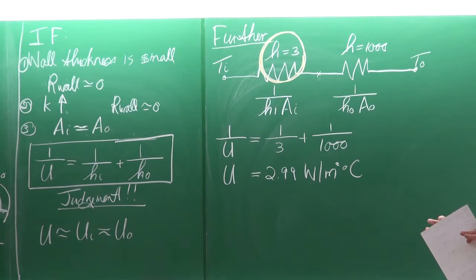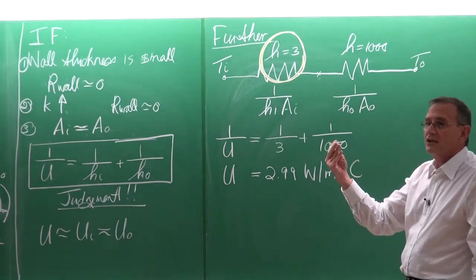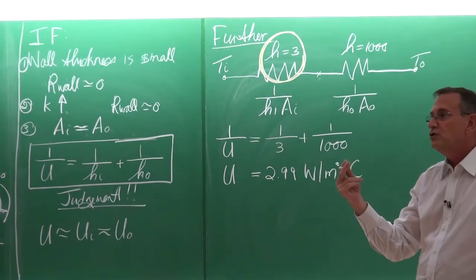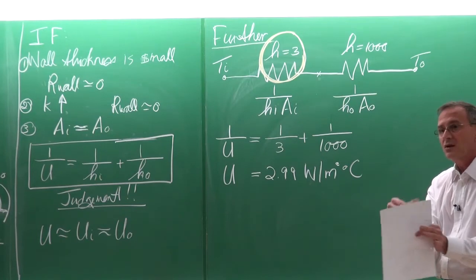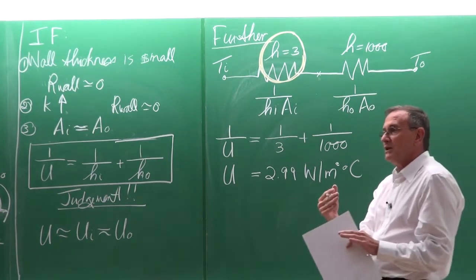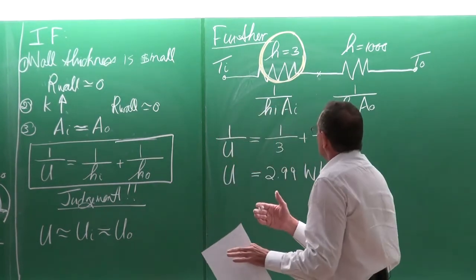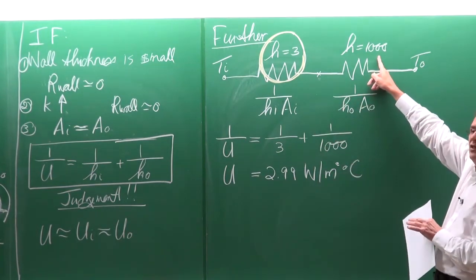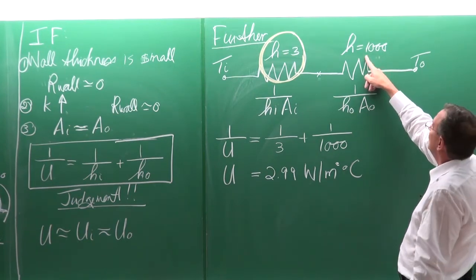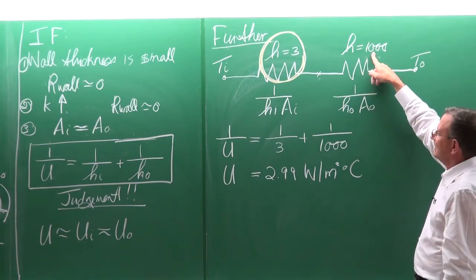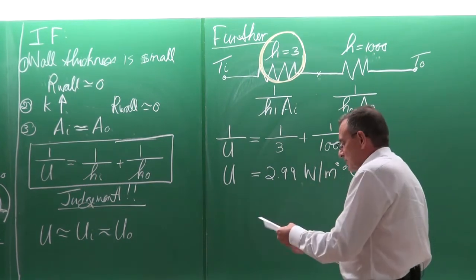If you have a case like this and want to enhance heat transfer, there are two methods: change the surface area, or put on fins — which also increases surface area. If you put fins on the high-h side, you are just wasting money — it will not help. If you increase h_outside to 2000 or even 10,000, the answer is still approximately 3. This is a very important thing to realize.